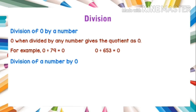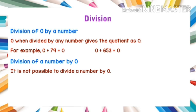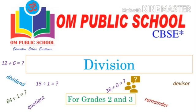Fourth, division of a number by 0: it is not possible to divide a number by 0. We cannot divide any number by 0. Thank you, students.